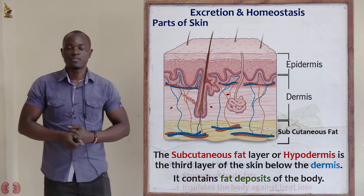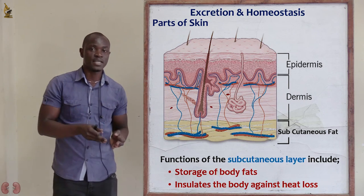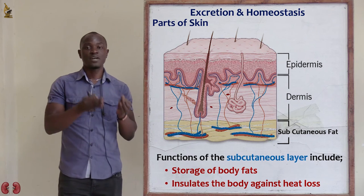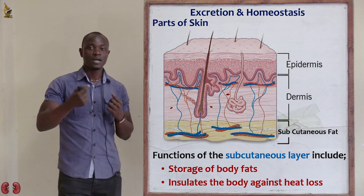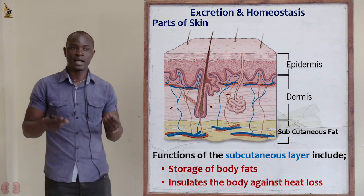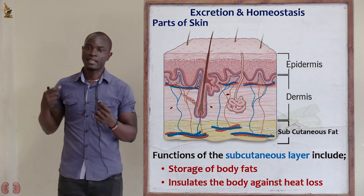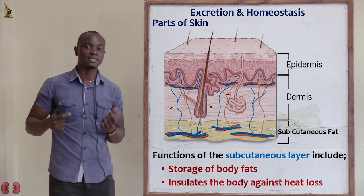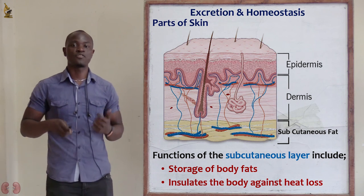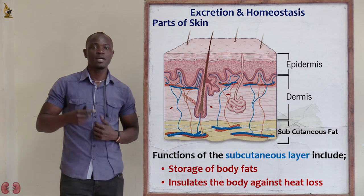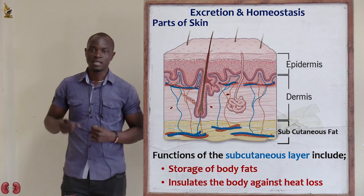The subcutaneous fat acts as a storage for excess fat in the body, serving as an energy reserve for the future. If someone feels hungry, the body will break down the subcutaneous fat to give the organism energy. Apart from that, it also insulates the body from excess heat loss.